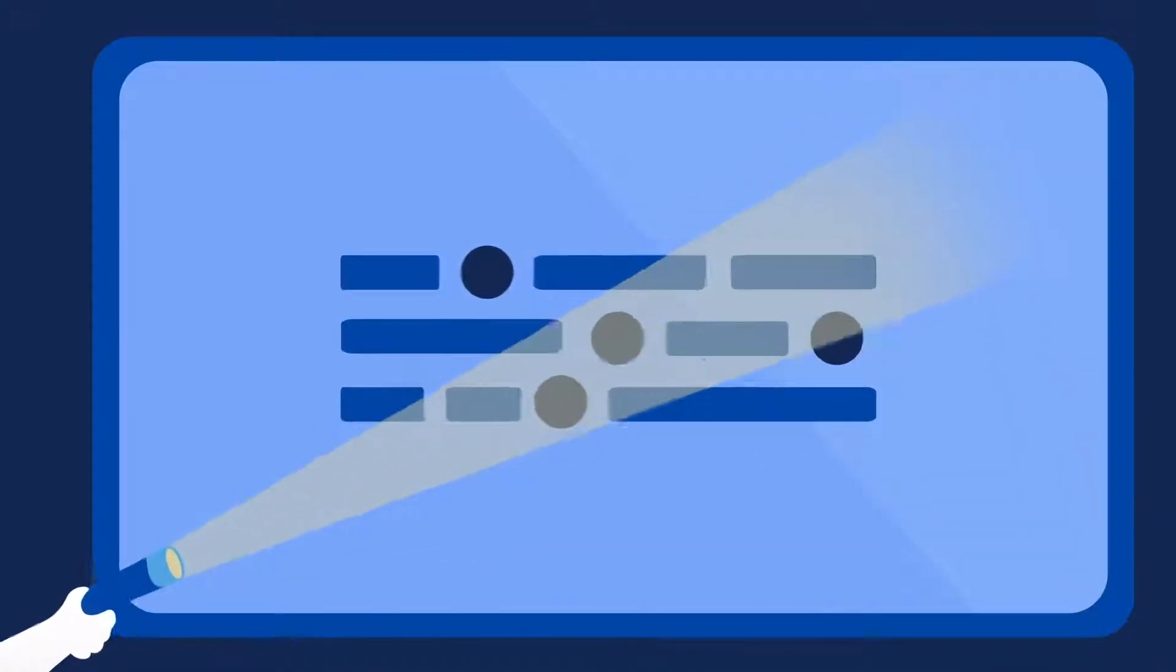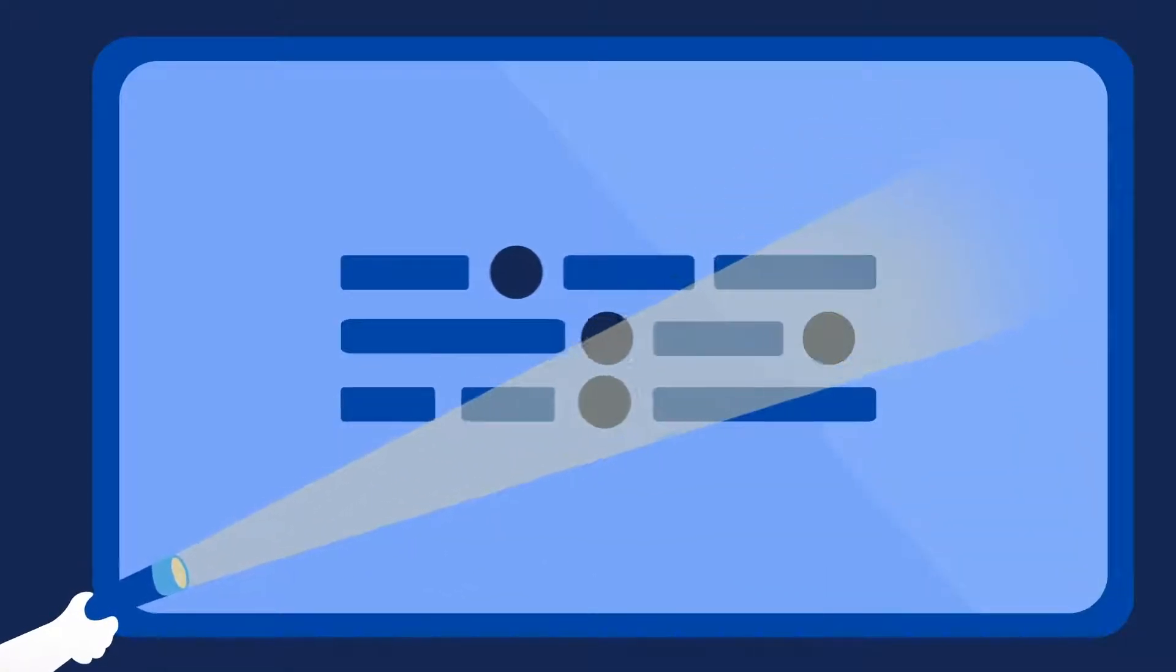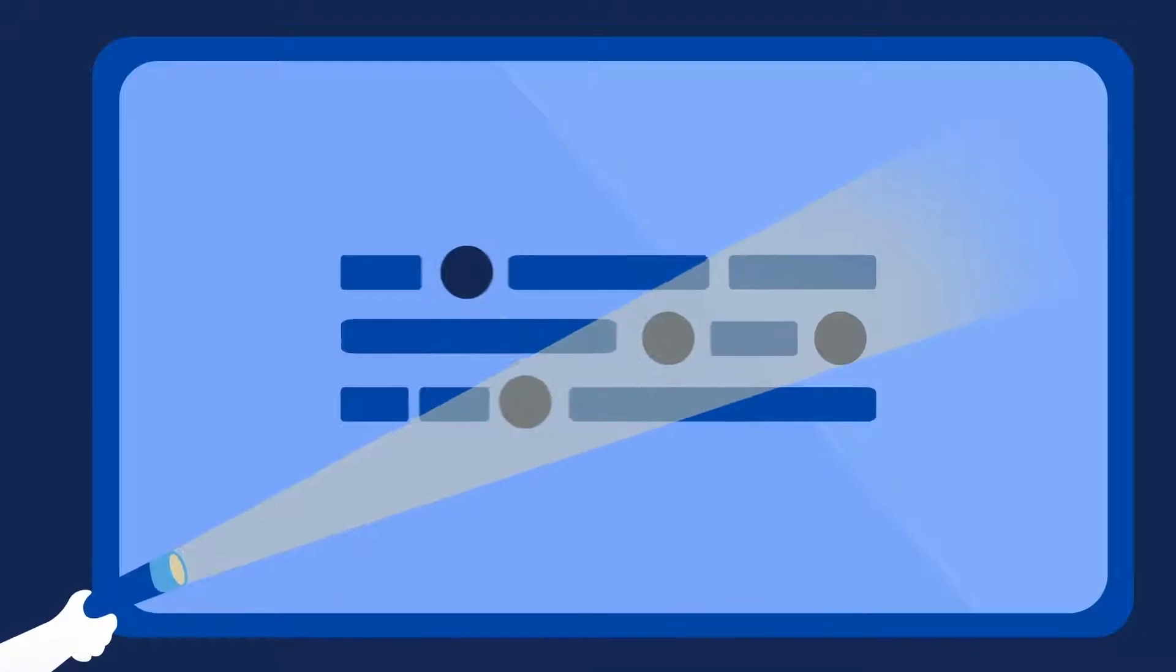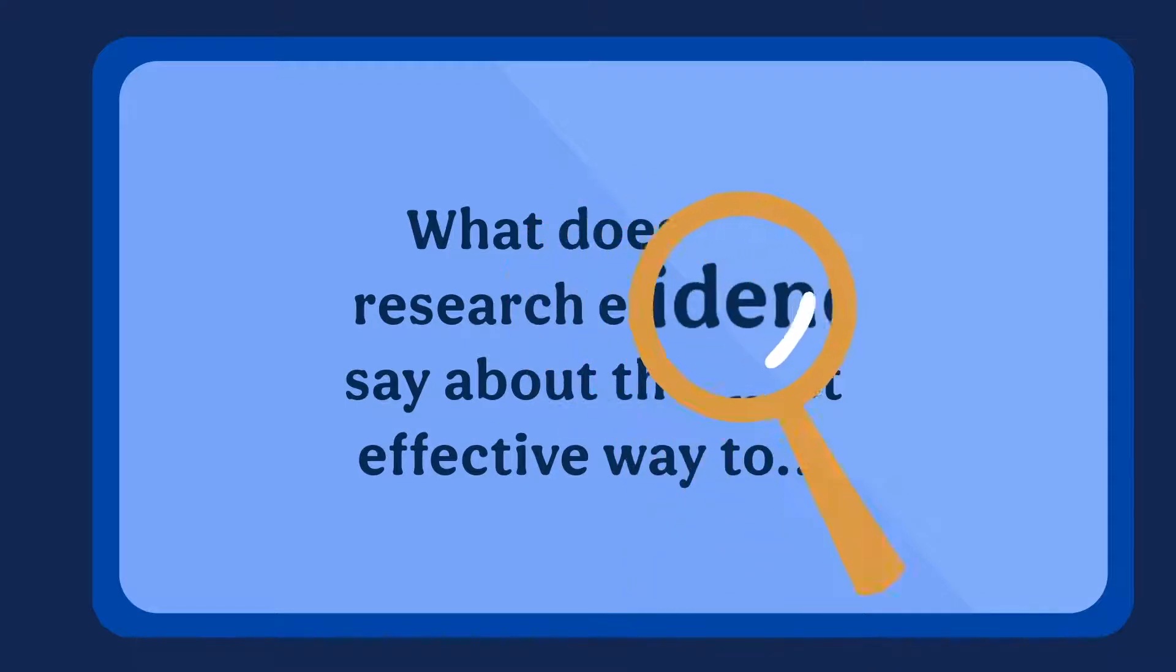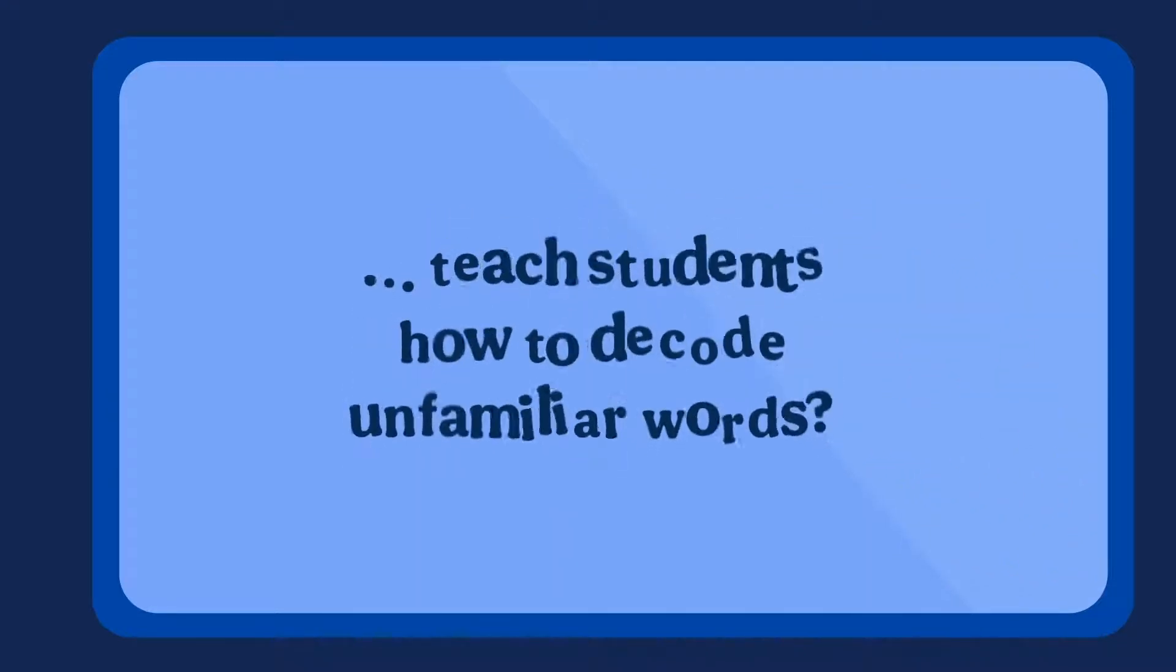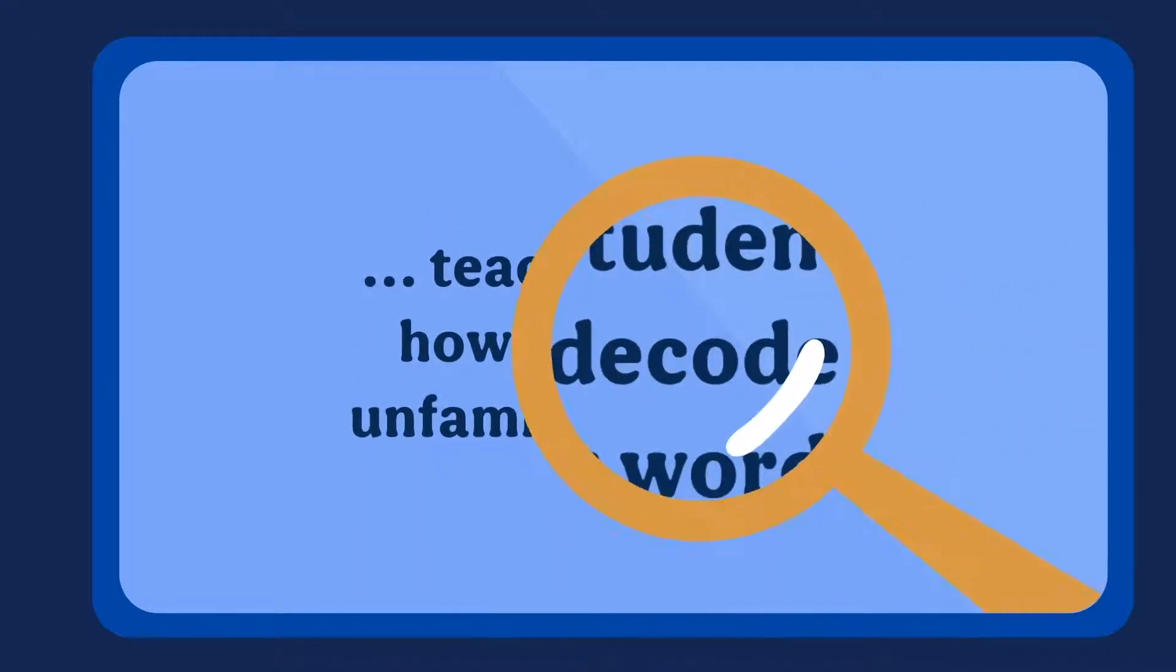One of the main reasons that students are struggling to read proficiently is that, when presented with an unfamiliar word, they cannot accurately decode it. What does the research evidence say about the most effective way to teach students how to decode unfamiliar words?